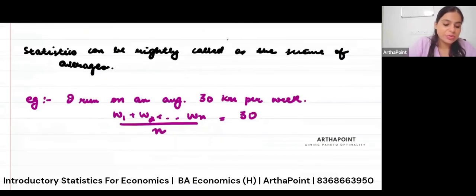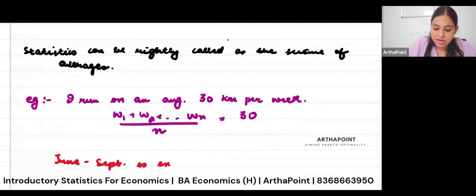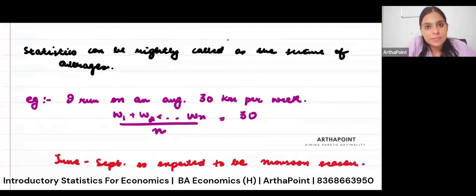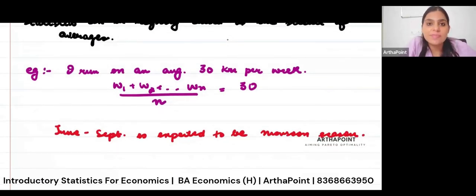Let's take another example. I tell you that June to September is expected to be monsoon season. Again, when I say that something is expected to be something, I am talking about my experience which comes from what happened in the past on an average. So I may have observed that on an average in India, June to September is always seen as monsoon season. So I go ahead and use this term, expected to be monsoon season, based on the averages that I have seen.